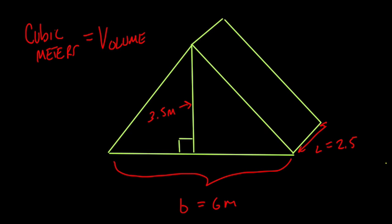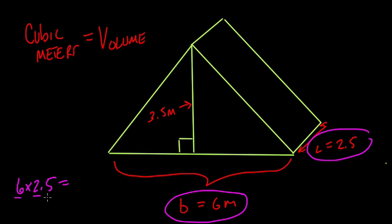So all we have to do for this shape is find the volume. How am I going to do that? Well, I'm going to multiply my base by my length first. 6 times 2.5, and that gives me, of course, well, 6 times 2 is 12, right? Times a half of 6 is 3, so that's 15 square meters.